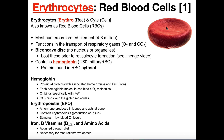Because red blood cells lack organelles and can't carry out oxidative phosphorylation or repair themselves, they have a short lifespan of 120 days — sometimes cited as 100 to 120 days, but 120 is the number typically memorized. Interestingly, prior to becoming a mature red blood cell, the precursor cell actually does have organelles and a nucleus — it jettisons them during development, losing its nucleus and organelles along the way.